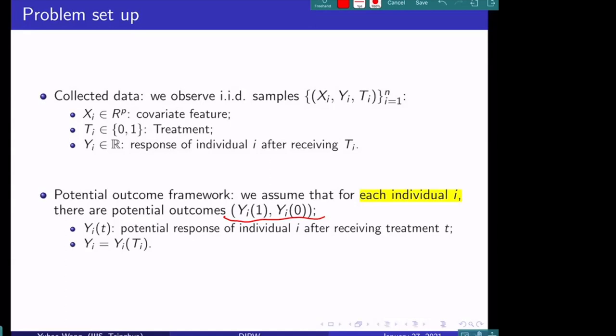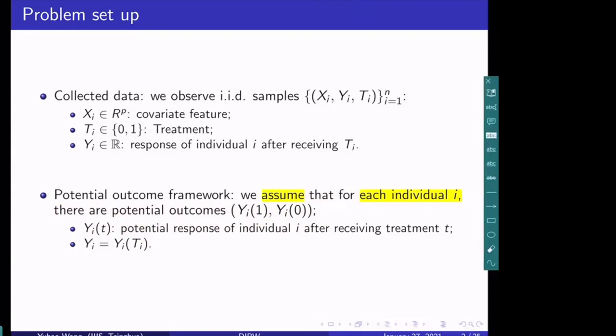In a medical trial, Y_i(1) is the potential response of individual i if they received the drug, and Y_i(0) is the potential response if they did not receive the treatment. Since each individual has already been assigned treatment T_i equal to zero or one, Y_i corresponds to Y_i(T_i) — the real response of this individual after receiving what they actually received.